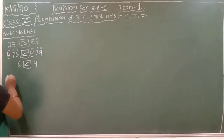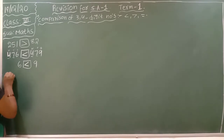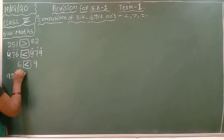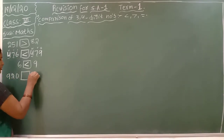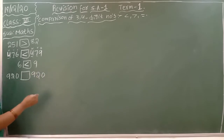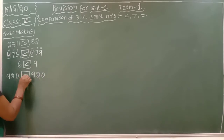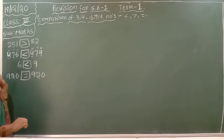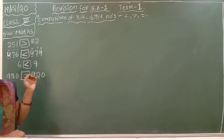For example, if you have the same number on both sides — like 9 and 9 — you have to keep the equal to symbol.